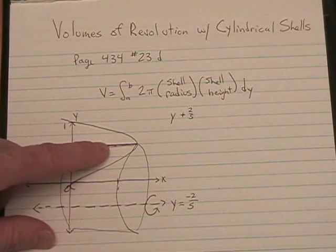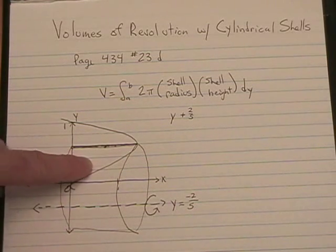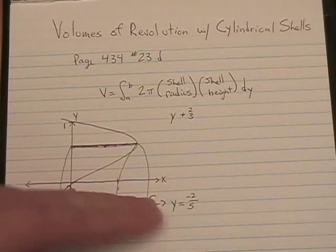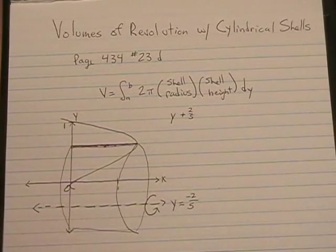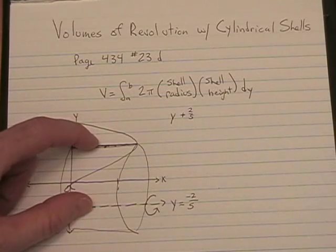All you do is y minus whatever the line is. If the line is above the x-axis, it'll be y minus something. If the line is below the x-axis, it'll be y plus something. We're just measuring this distance, which is y plus 2 fifths.